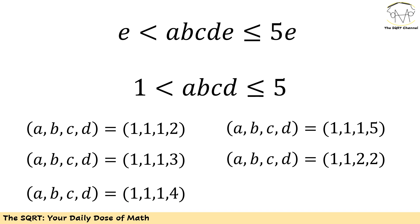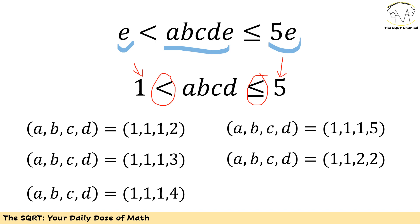So we have something very interesting: a·b·c·d·e is greater than e and less than or equal to 5e. Since e is a positive integer (not zero), we can divide everything by e — the inequalities stay the same — giving us: a·b·c·d > 1 and a·b·c·d ≤ 5. These are positive integers, so there are a finite number of cases, and the maximum product of a·b·c·d is 5.